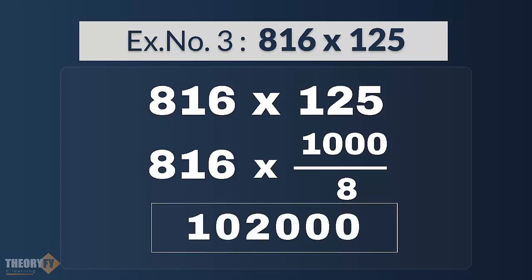So, when we divide 816 by 8 is 102 and then just simply place three 0s after it. You have your answer.